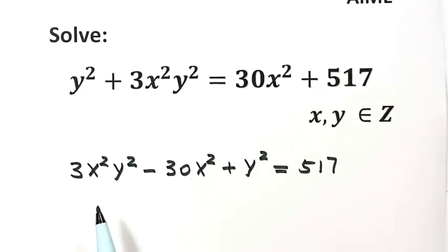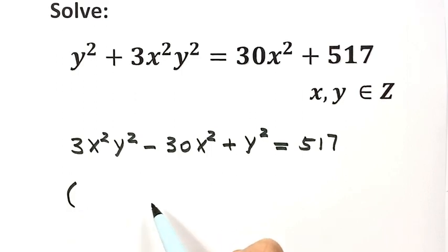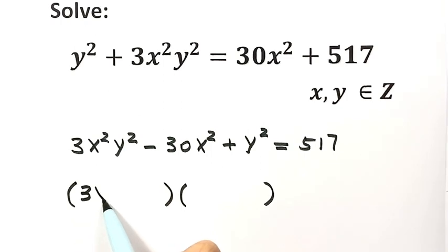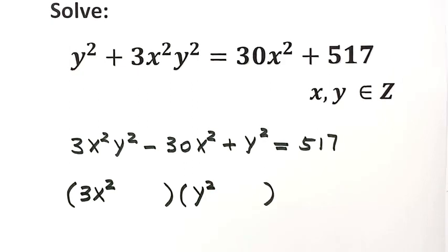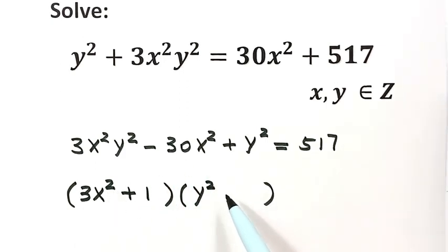Because we have one equation with two variables, we want to put the left hand side as a product. The first factor is 3x squared, and the second factor contains y squared plus 1. We have 3x squared y squared here, so we put 3x squared in the first factor and y squared here, then plus 1. We have negative 30x squared, so 3x squared times negative 10 gives us that term, so we put negative 10.